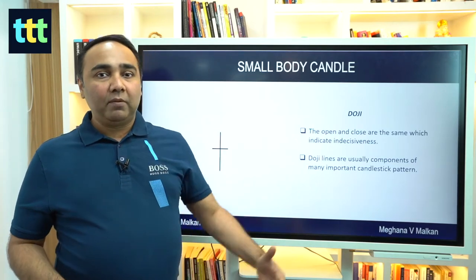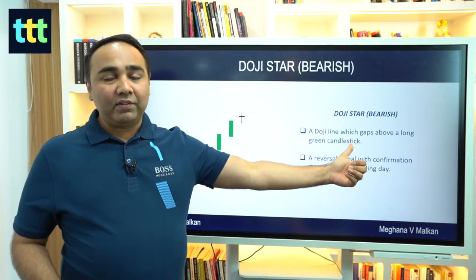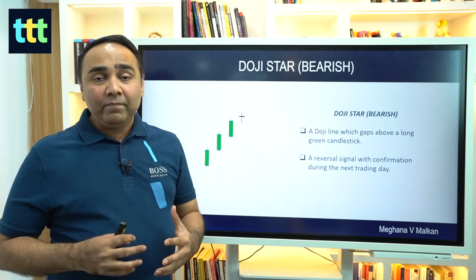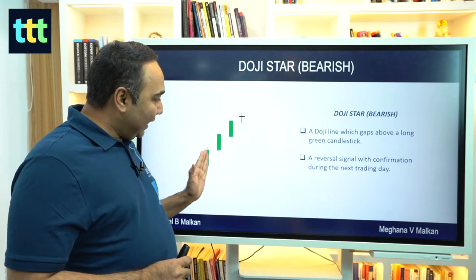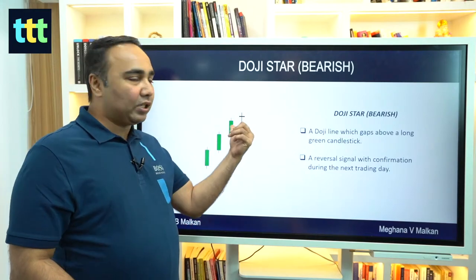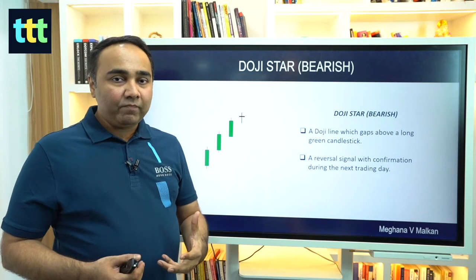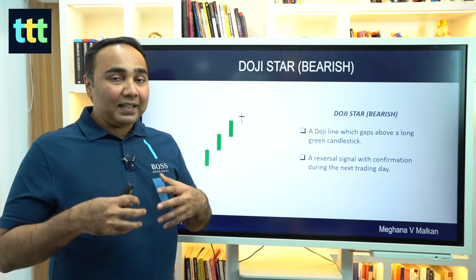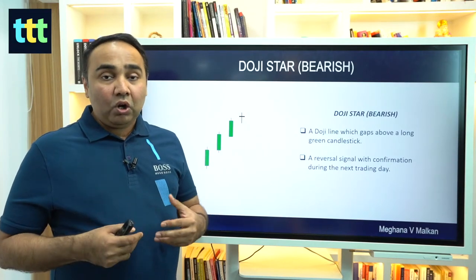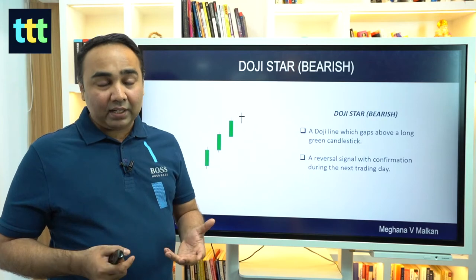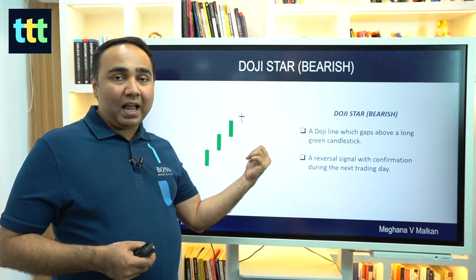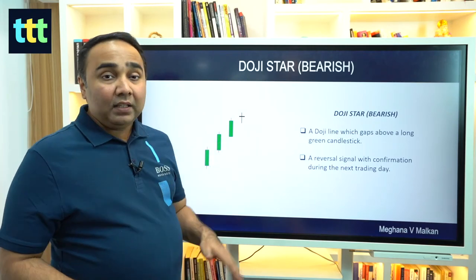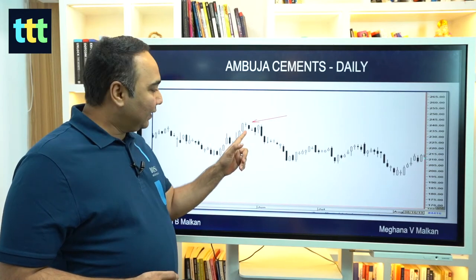When a Doji comes after a bullish trend, it's called a Doji star, which is bearish. Even if you don't remember the name, understand this: there is a green candle meaning bulls are in control, but after that comes a Doji — the bulls are now indecisive and bears are trying to come in. This is an alert signal. If you're holding a long position and the next day the market goes down, you might need to exit.